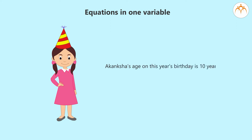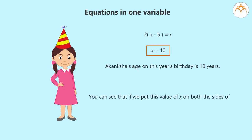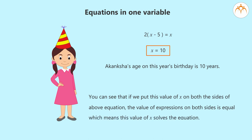We found out that Akanksha's age on this year's birthday is 10 years. We made the equation 2 times X minus 5 equals X from the given information and after solving got X equals 10. You can see that if we put this value of X on both sides of the equation, the expressions on both sides are equal, which means this value of X solves the equation. Let us solve one more example.